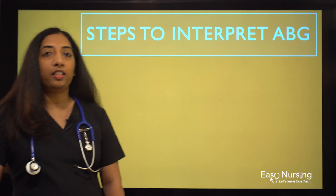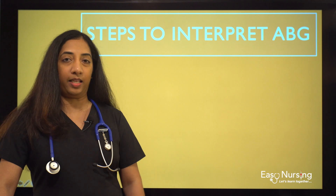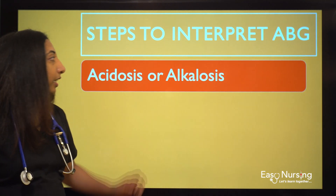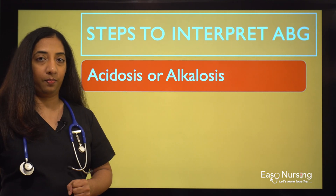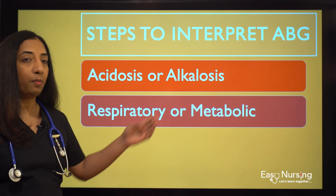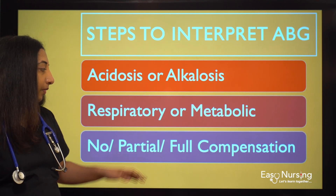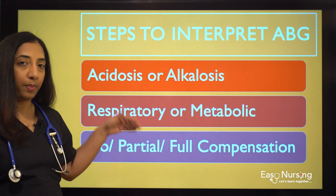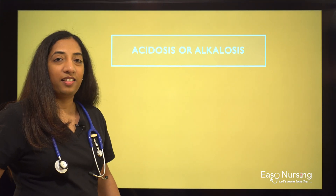There are mainly three steps to interpret ABG. The first one is we have to determine if it is acidosis or alkalosis. The second one is if it is respiratory or metabolic. The last one is if it is non-compensated, partially compensated, or fully compensated.